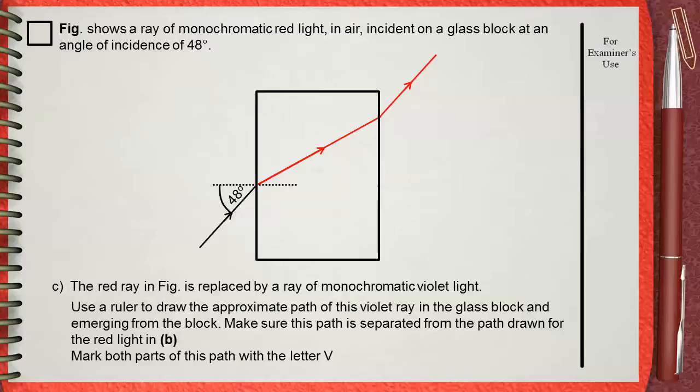And emerging from the block, make sure this path is separated from the path drawn for the red light in B. Mark both parts of this path with the letter V.